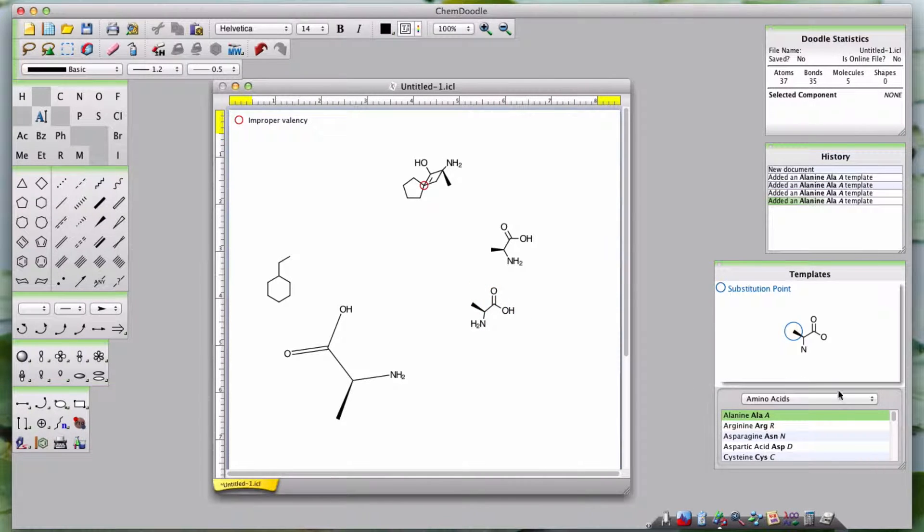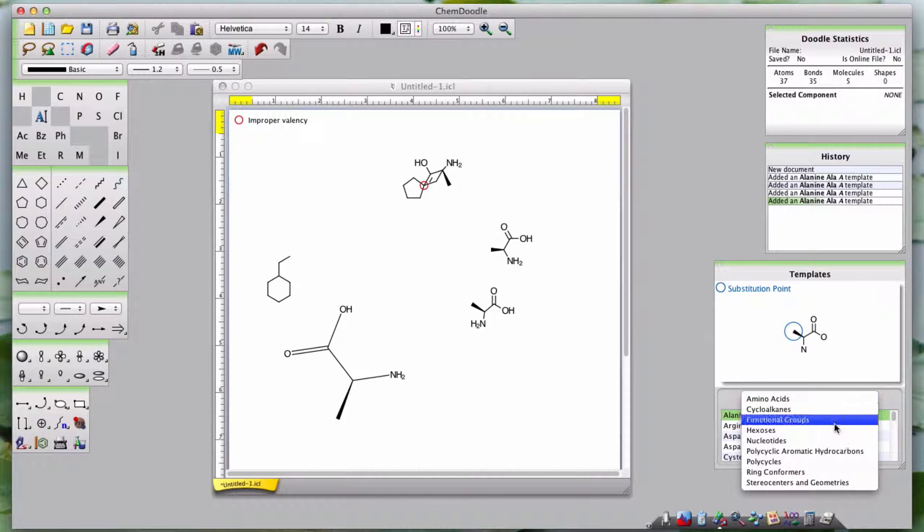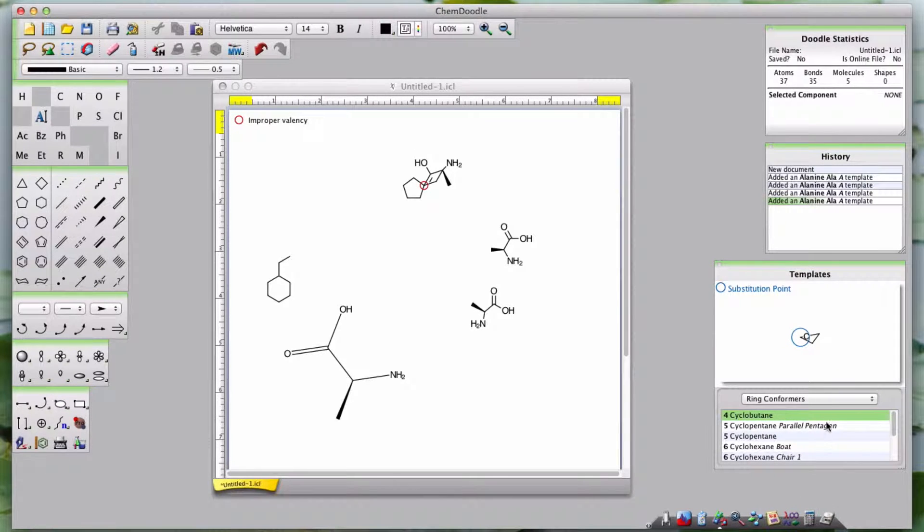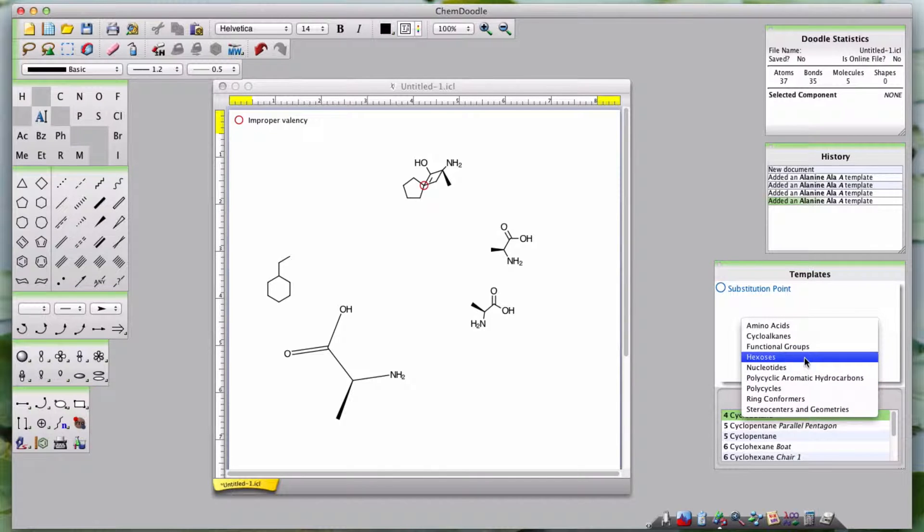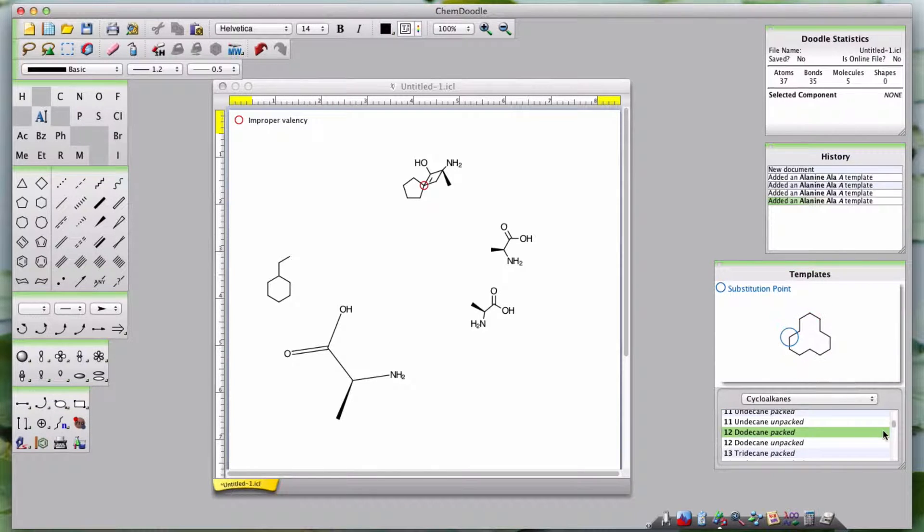Below the Main Structure Panel is a drop-down tool for selecting what template group you want. After selecting the group you want, the list below will be populated with templates from that group.